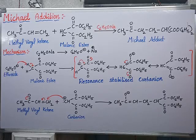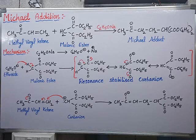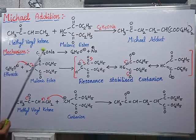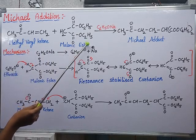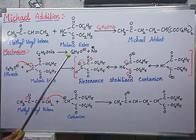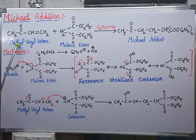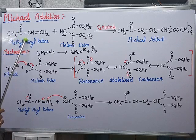In today's video, I'm explaining Michael addition, a very important chemical reaction. Here, methyl vinyl ketone is reacting with a malonic ester in the presence of a base to give a Michael adduct as a product. Methyl vinyl ketone is an alpha-beta unsaturated ketone.